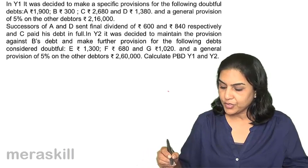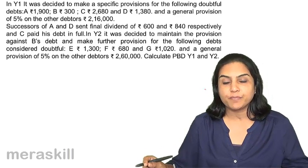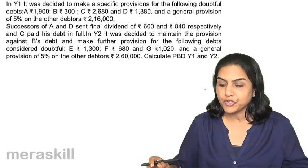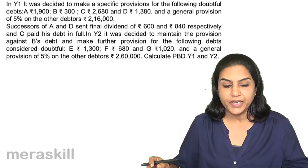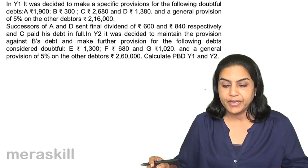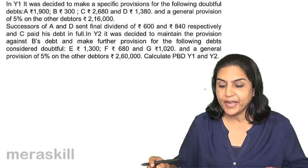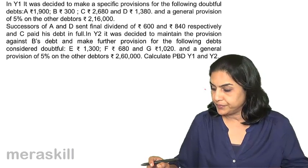In Year 1, it was decided to make a specific provision for the following doubtful debts: A - 1,900; B - 300; C - 2,680; and D - 1,380.